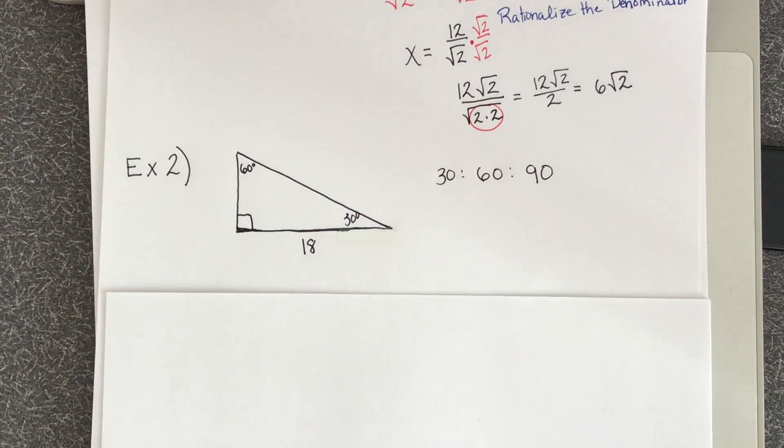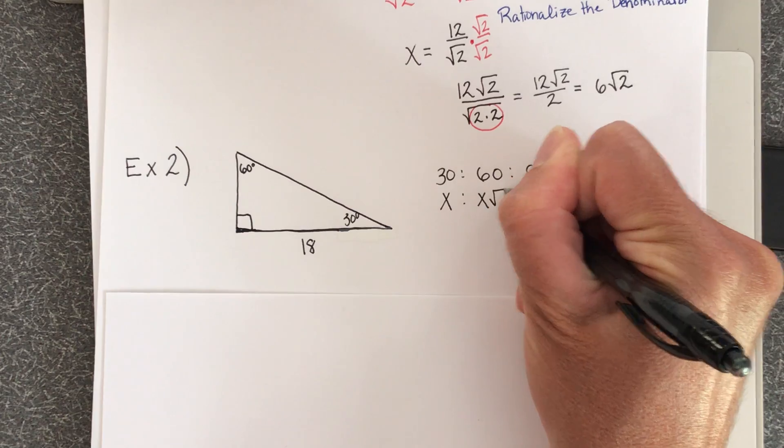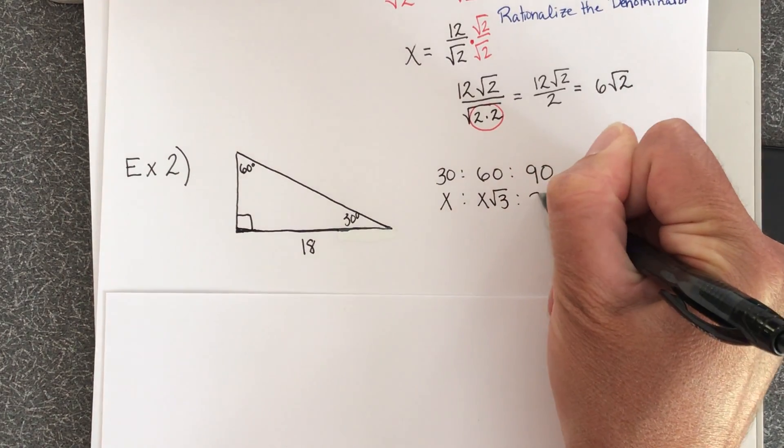And then now I'm going to write down the ratio of the side length. So if you remember it was x, x times the square root of 3, and 2x.